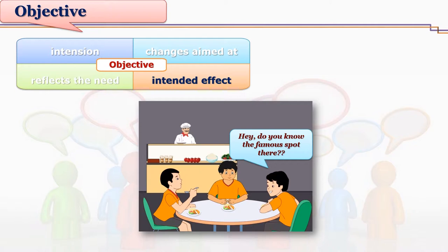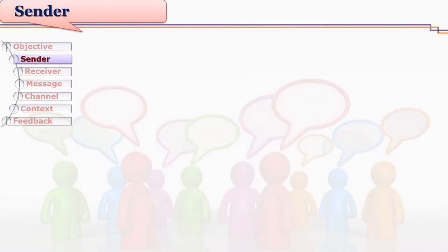A sender tries to communicate with some intended effect — the sender wishes that intended effect should come into the picture at the end of the communication. Here, Raga's friends want him to join for picnic; they want him to get excited about it. To achieve that intended effect, they start describing the picnic spot, encourage and motivate him, and Raga agrees to come and convince his parents.